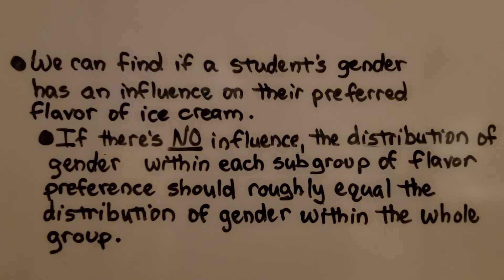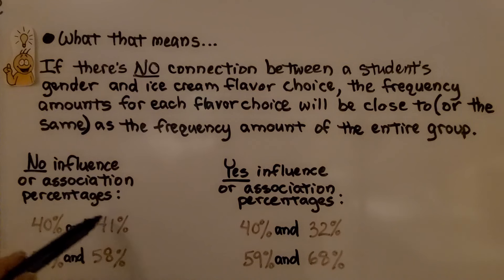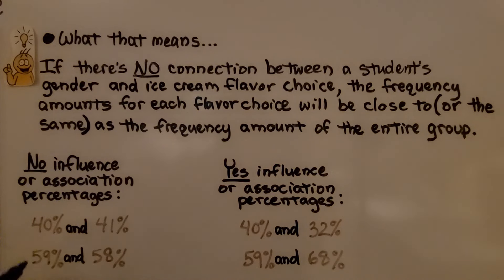We can find if a student's gender has an influence on their preferred flavor of ice cream. If there's no influence, the distribution of gender within each subgroup of flavor preference should roughly equal the distribution of gender within the whole group. If there is no connection between a student's gender and ice cream flavor choice, the frequency amounts for each flavor choice will be close to or the same as the frequency amount of the entire group. So if there's no influence or association, the percentages would be like 40% and 41% — see how they're almost the same.